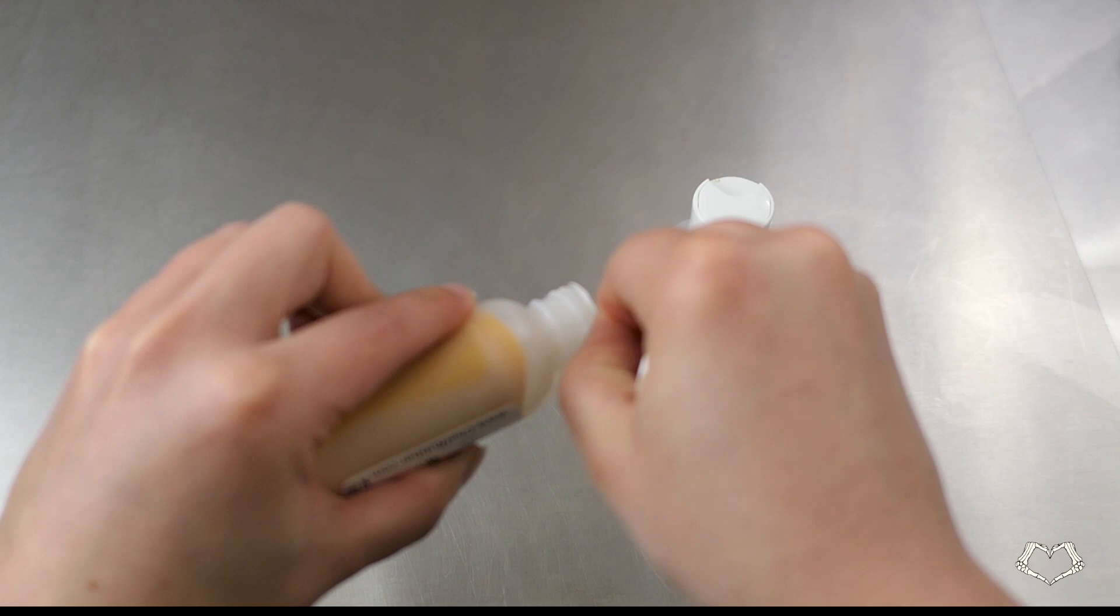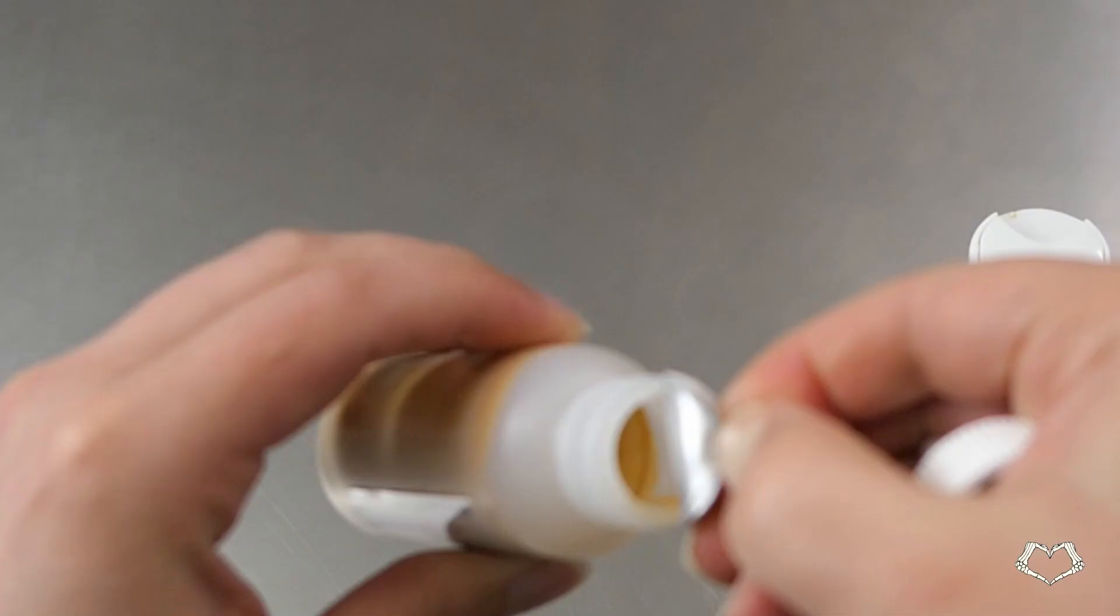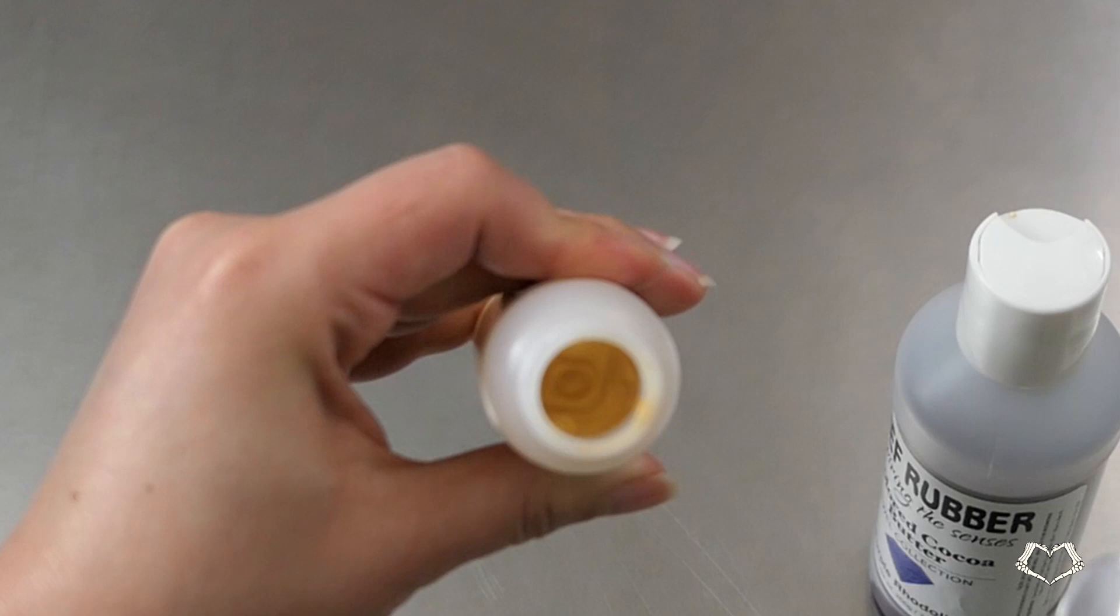You can mix your own colors, of course, using cocoa butter and oil-based food colorings, but then you have to temper it, and it's hard to color match. The pre-made stuff comes tempered already, so as long as you're careful not to melt the entire thing, you don't have to temper it.